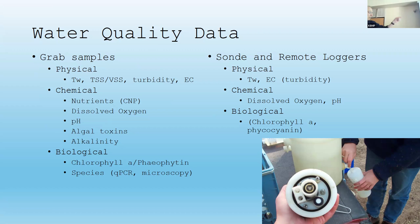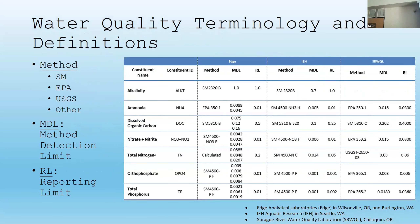That's a picture of two things happening at once: a data sonde and a grab sample being processed from a churn splitter at state line. When we get into this, we have all these methods. There are standard methods, EPA methods, USGS methods, and others. What's really important — when you build your programs — just write it down, so we can share information and understand what it really is.